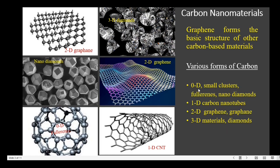Examples for zero dimensional materials are small clusters, fullerenes, and nano diamonds. For one dimensional carbon nanomaterials, the example is carbon nanotubes. For two dimensional nanomaterials, the example is graphene and graphane. The last one is three dimensional carbon nanomaterial, which is diamond.